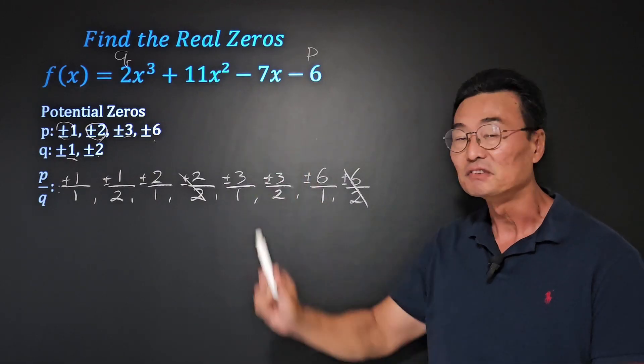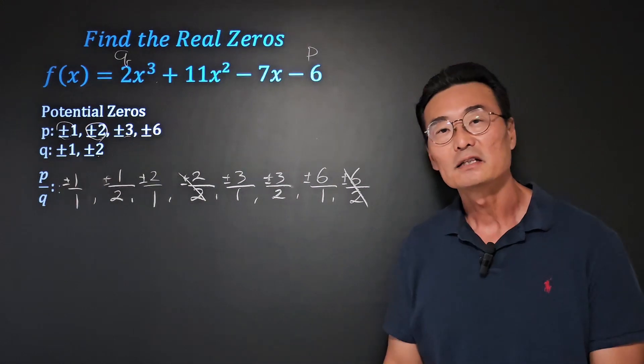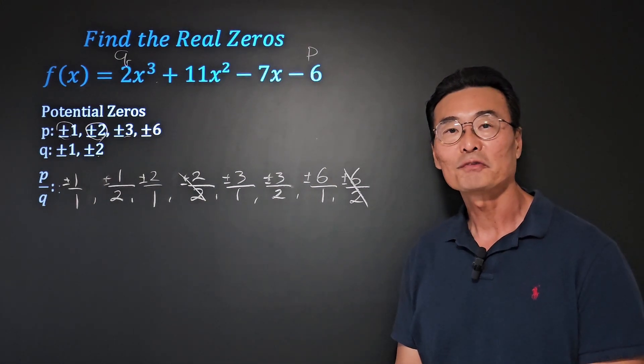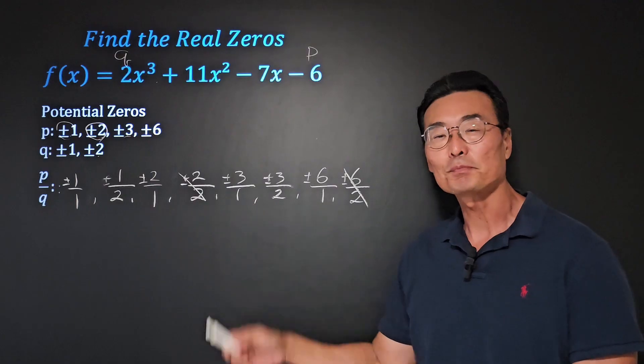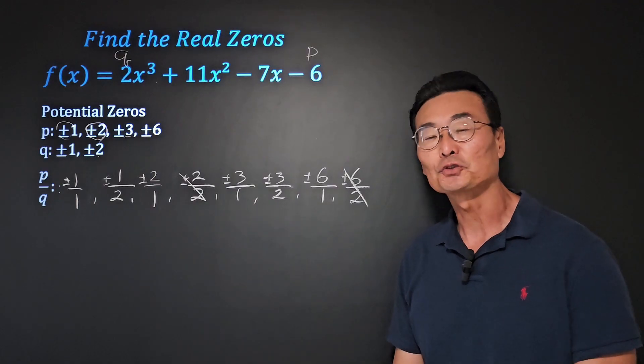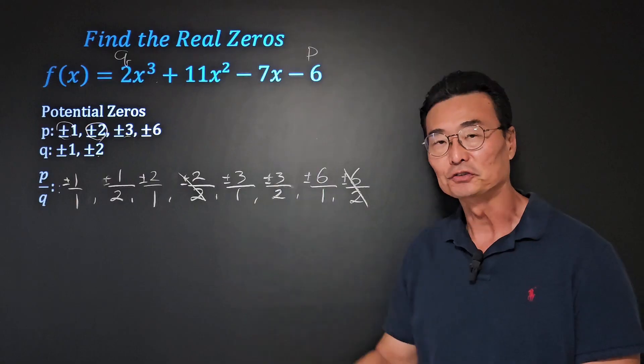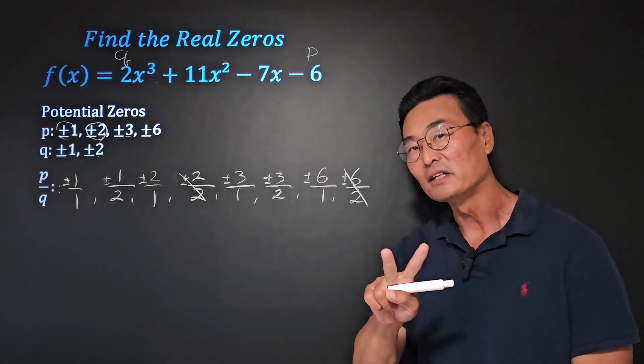In the next step, what we want to do is we want to find out which of these possible zeros are actual real zeros to the function. There are two ways to do this.